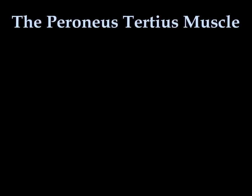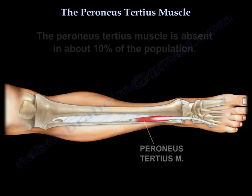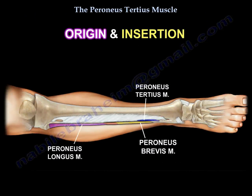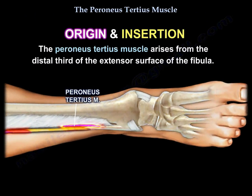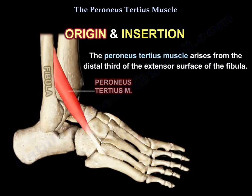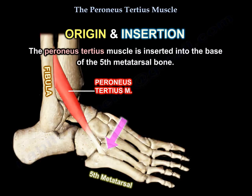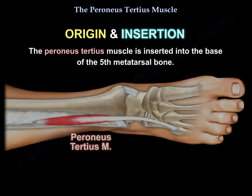The peroneus tertius muscle is absent in about 10% of the population. Its origin is the distal third of the extensor surface of the fibula, and it inserts into the base of the fifth metatarsal.